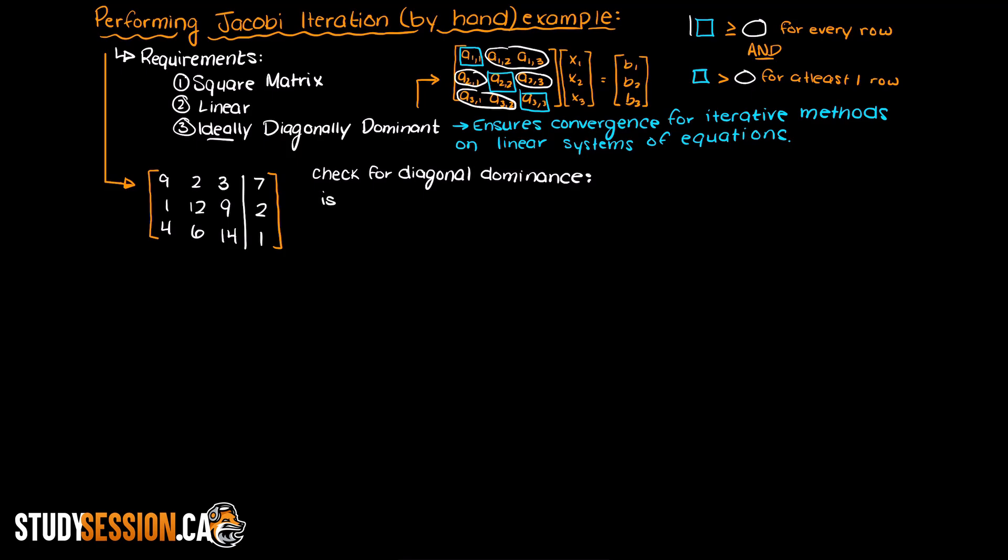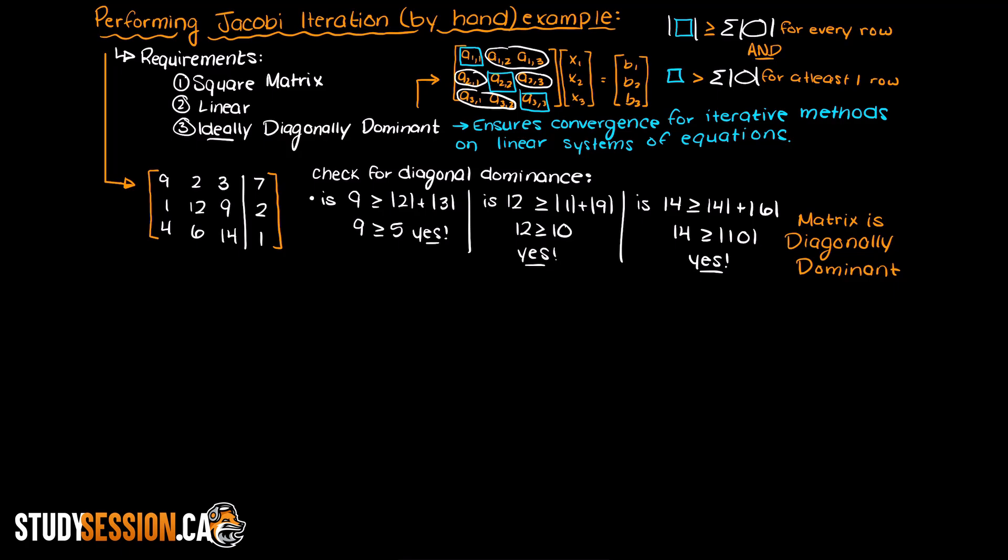Additionally, we need for at least one of the diagonal values of the matrix to be strictly greater than the sum of the other elements in that row. So as you can see here it is clear that our matrix is diagonally dominant. Therefore, no matter what we assume for our initial x vector values our answer will always converge.